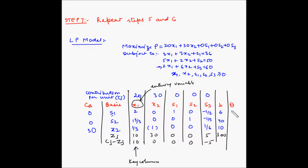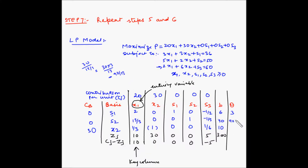Now we have to find the departing variable, so we need to find the value of theta. The value of theta is found by dividing the values in column B by the corresponding values in the key column. So: 6 divided by 2 is 3; 30 divided by 13/3 equals 30 times 3/13 which is 90/13; and 10 divided by 1/3 equals 10 times 3 which is 30. So here the lowest element is 3, this becomes our key row and the intersection of key row and key column gives the key element 2.